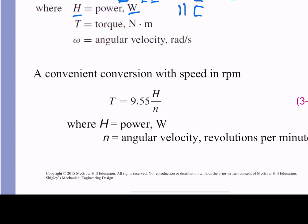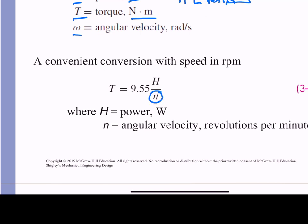So H is in units of watts using the metric system. Torque is in newton meters, and omega is in angular velocity. If you want to convert from omega to RPM, you can use this equation right here, where H is again still given in watts, and N is now in revolutions per minute.